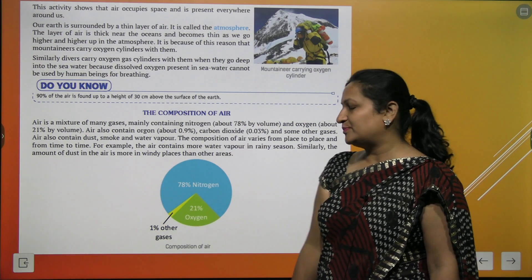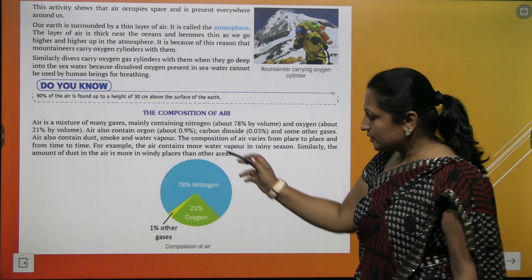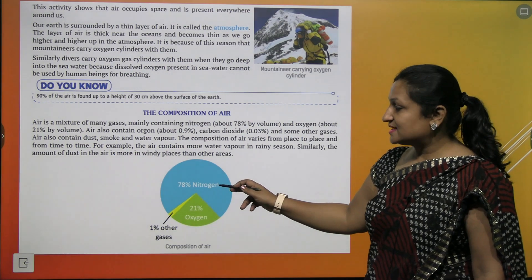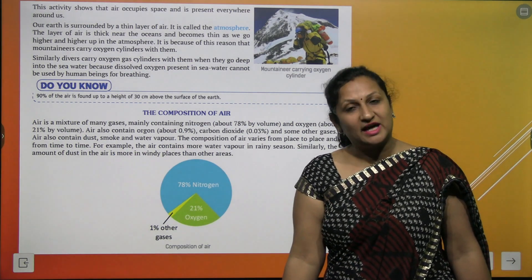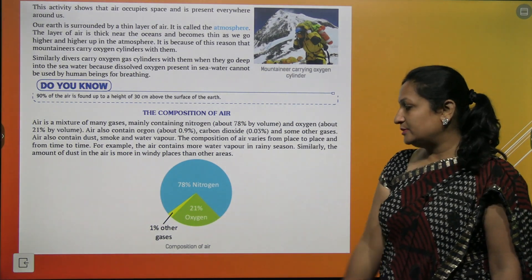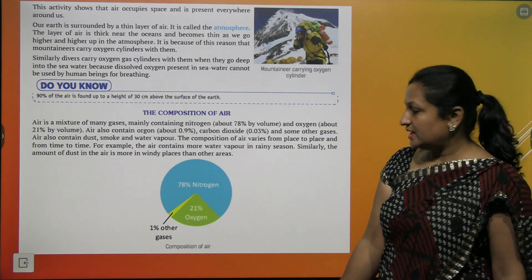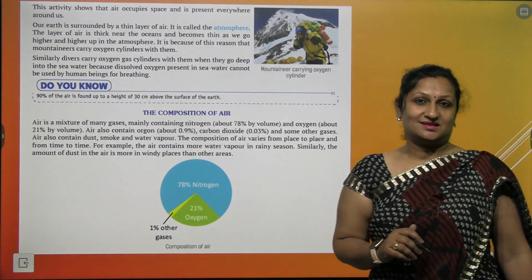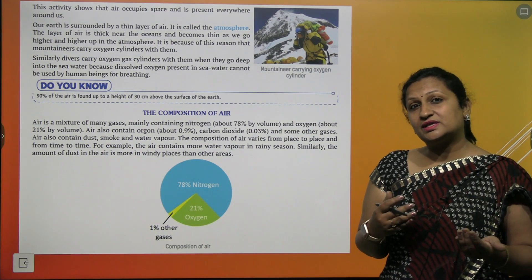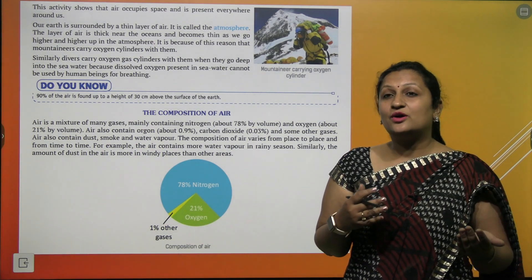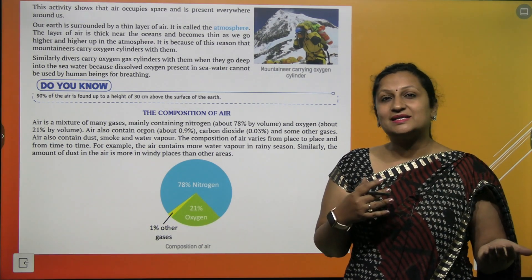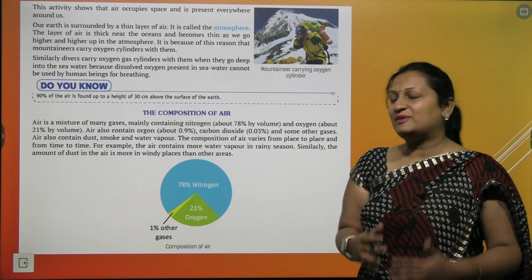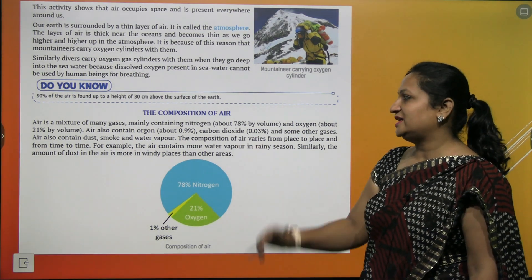Let us study about the composition of air. As you can see in this graph, air has 78% nitrogen, 21% oxygen, and 1% other gases. Other gases kaun kaun si ho sakti hain? It can be carbon dioxide, dust particles, and noble gases. All these make up the composition of air.